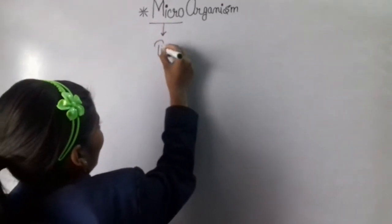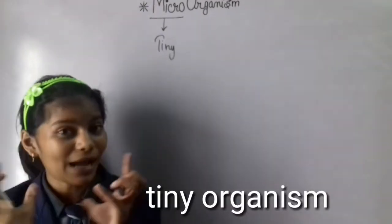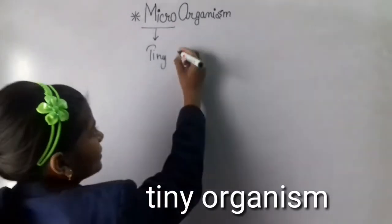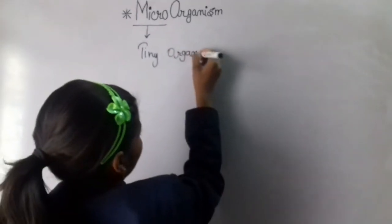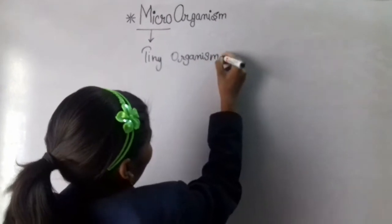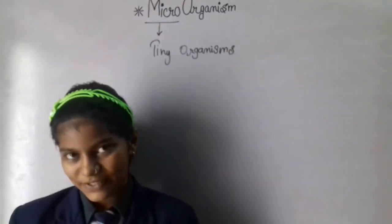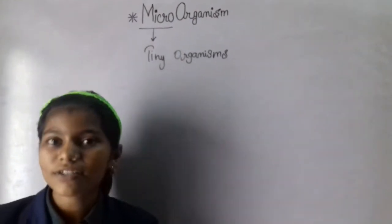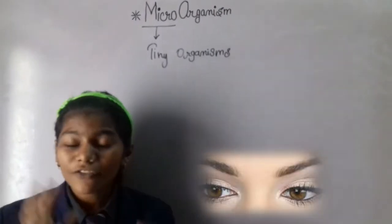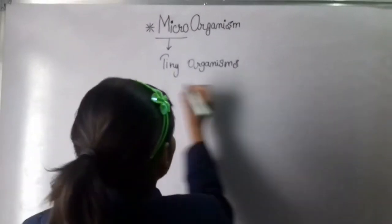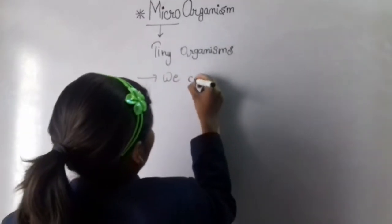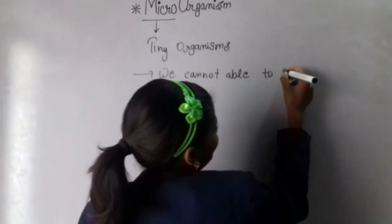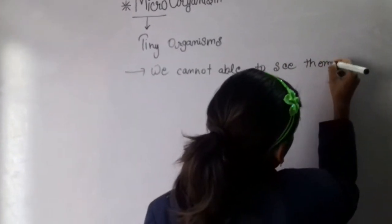Micro indicates tiny, and organism means living beings. So microorganism means tiny organisms, which we cannot see by naked eyes. They are very, very tiny, which means we are not able to see them.